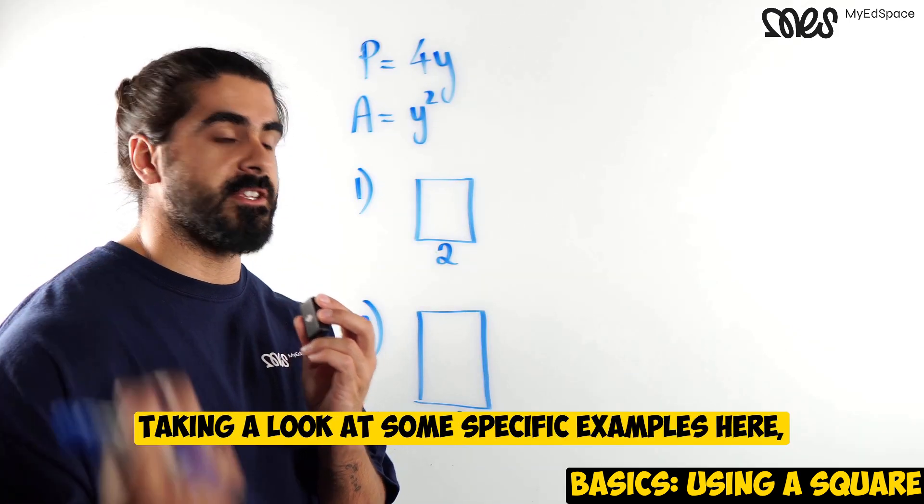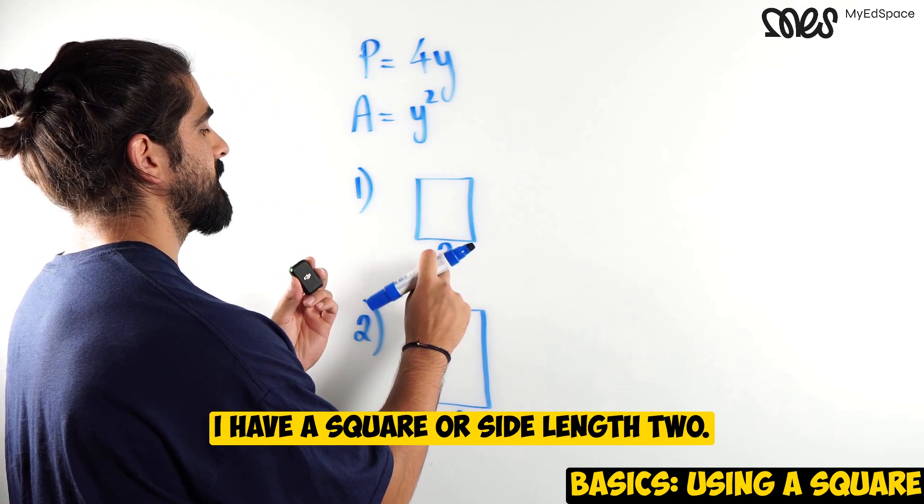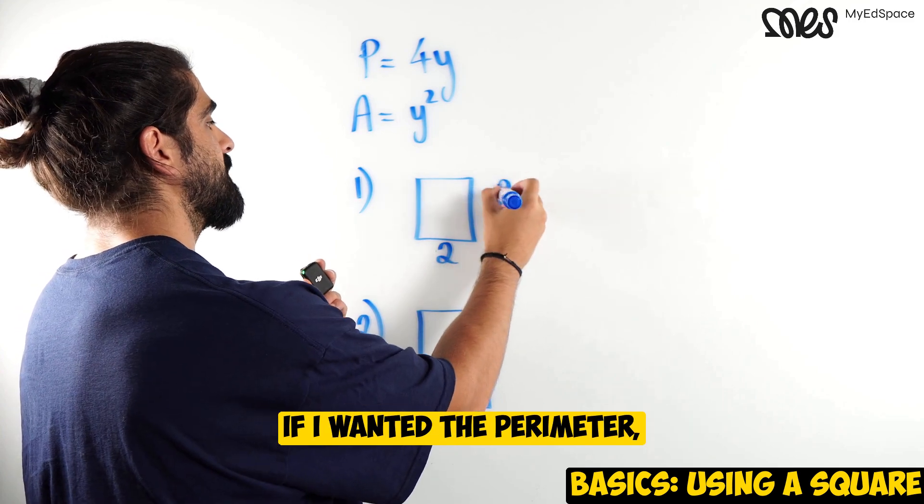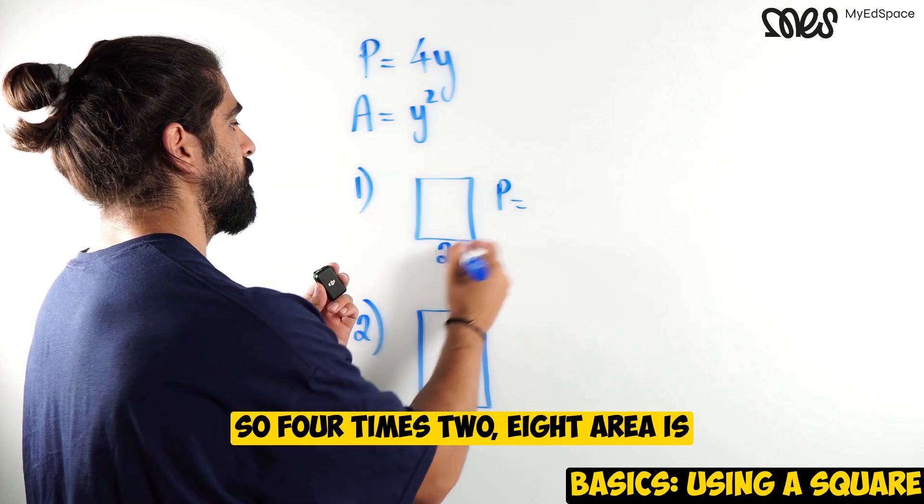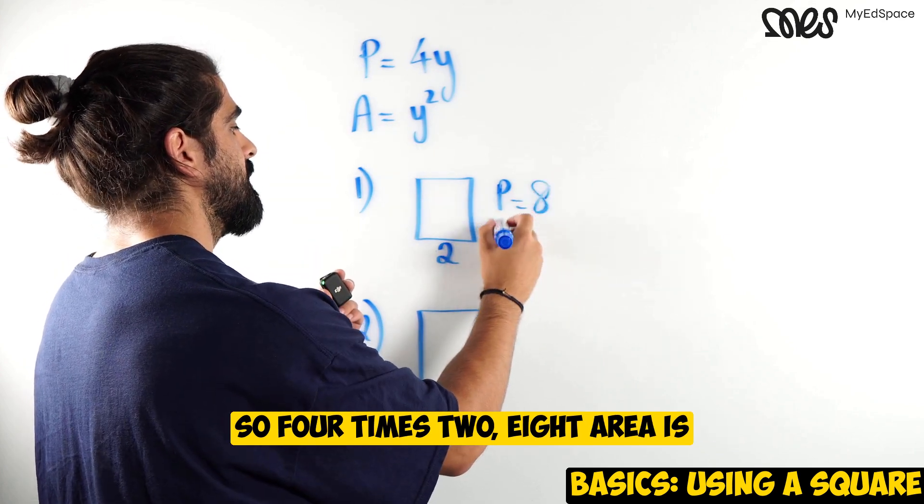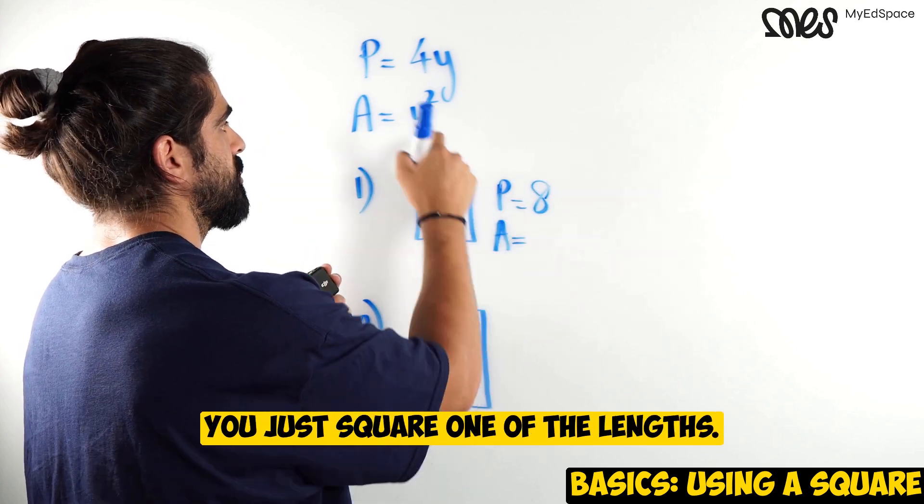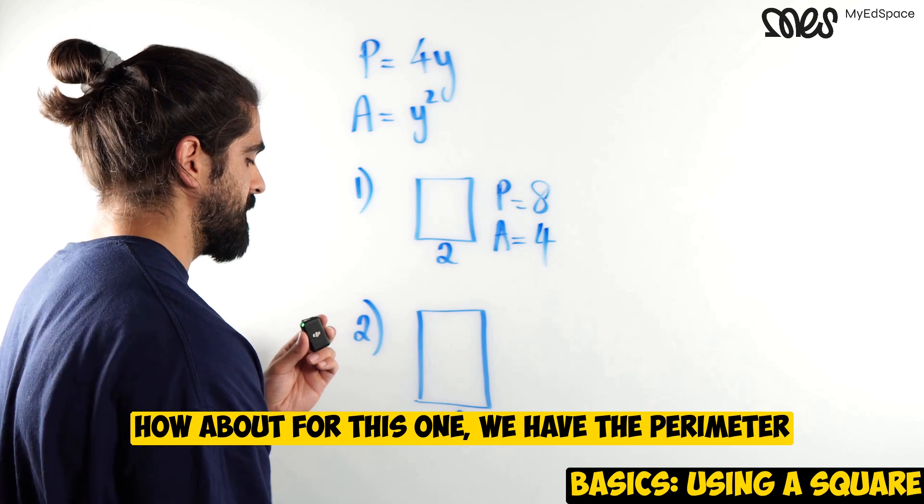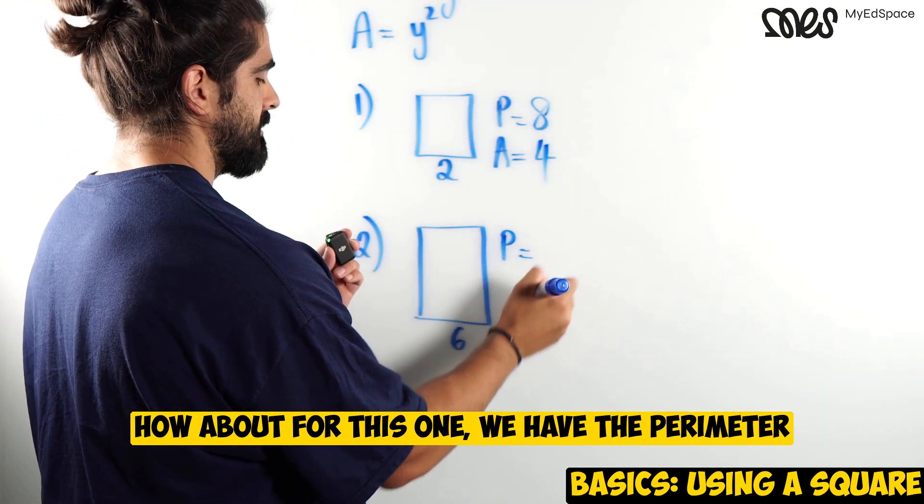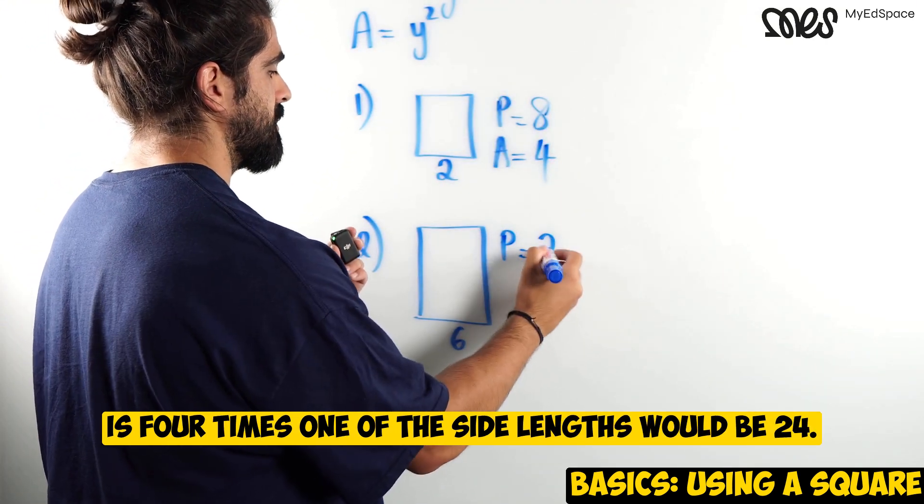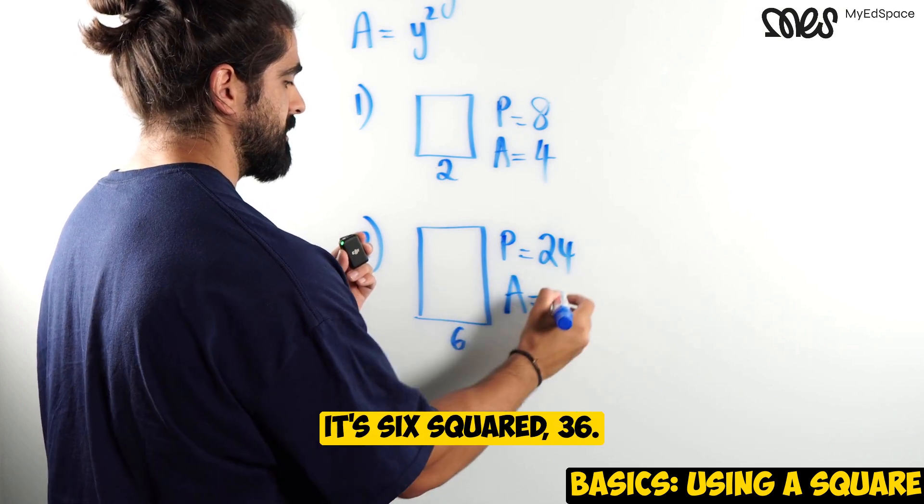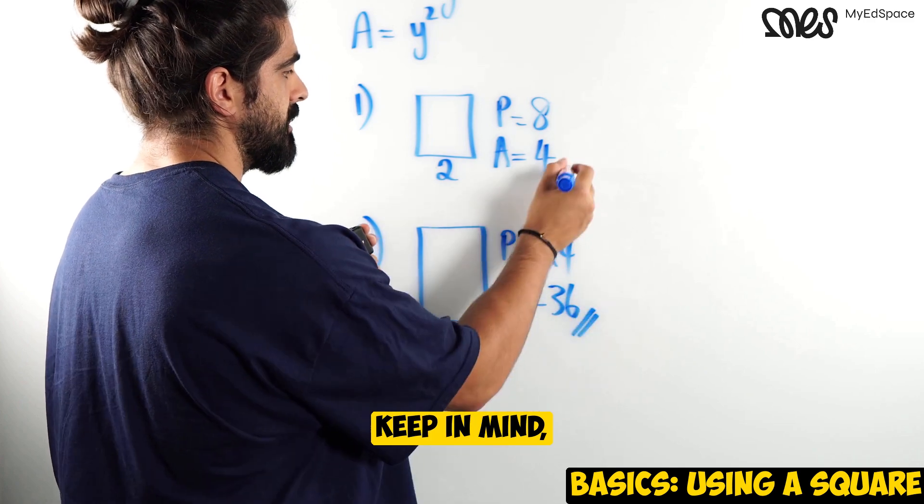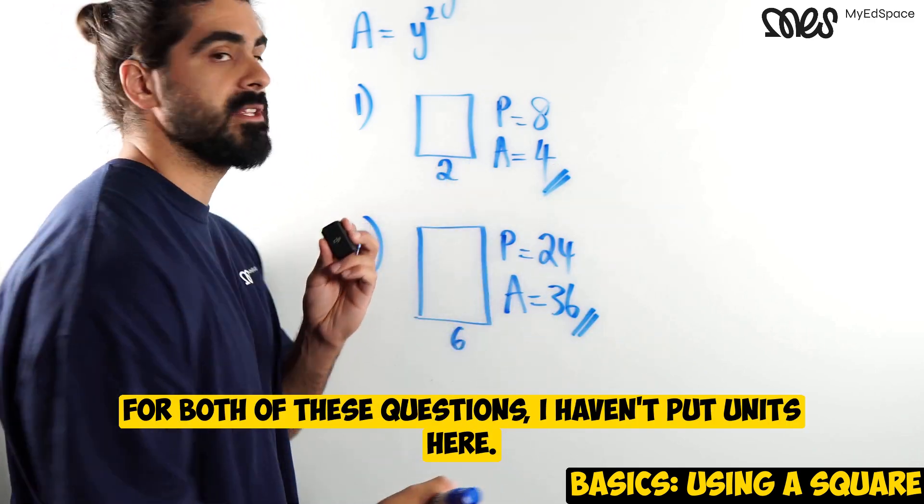So in this case, the perimeter, and this is a generalized statement, would be 4y, and the area is y squared. Taking a look at some specific examples, here I have a square of side length 2. If I wanted the perimeter, I know it's just 4 times the length, so 4 times 2, 8. Area is you just square one of the lengths. 2 squared is 4. How about for this one? We have the perimeter is 4 times 1 of the side lengths, would be 24. What's the area? It's 6 squared, 36. Keep in mind, for both of these questions, I haven't put units here.